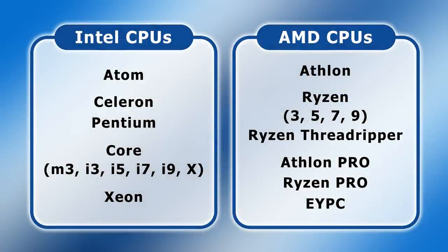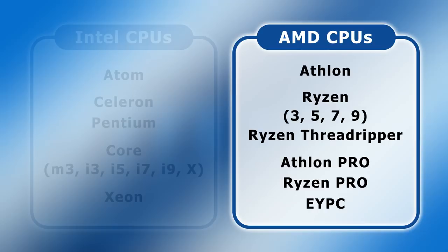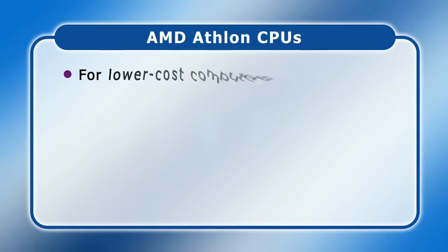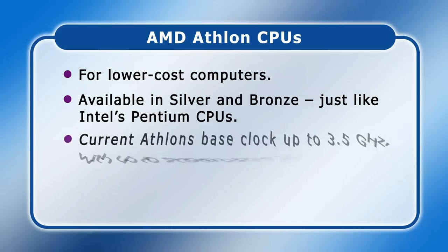In the last few years, the dominance of Intel in the microprocessor marketplace has been challenged by AMD, or Advanced Micro Devices. Today, AMD's lower-end chips are members of its Athlon family, with silver and gold models available in direct competition to Intel's silver and gold Pentium chips. Athlon-based clock speeds are up to 3.5 GHz, with up to 4 cores and 6 MB of cache.